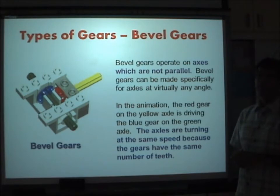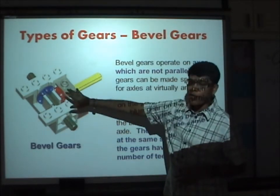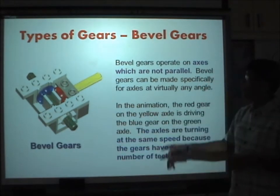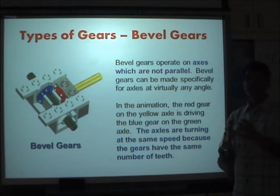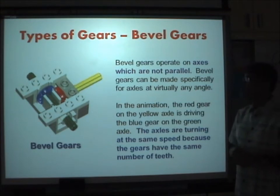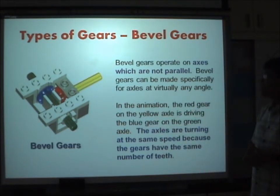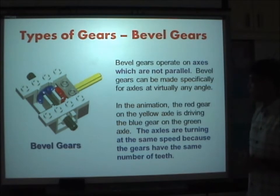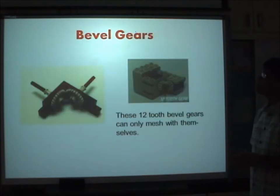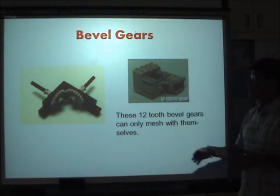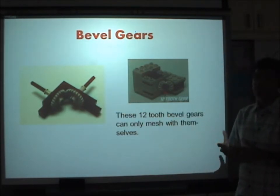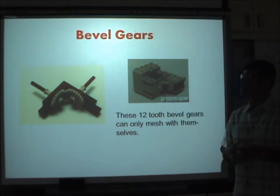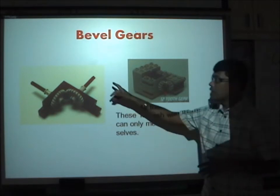Now we move on to bevel gears. Bevel gears operate on axes which are not parallel, which is different from spur gears. Bevel gears can be made specifically for axles at virtually any angle. In the animation, the red gear on the yellow axle drives the blue gear on the green axle. The axles turn at the same speed because the gears have the same number of teeth. These 12-tooth bevel gears can only mesh with themselves.